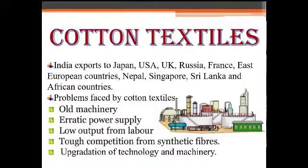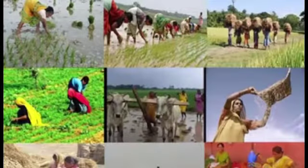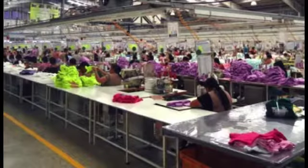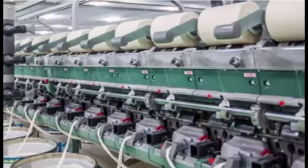The textile industry in India exports its products to countries like Japan, USA, Nepal, Singapore, etc. Some of the problems faced by this industry are: low output of labor, as the productivity of labor is low. The clothing sector needs high quality and cost-effective cloth processing facilities, for which modernization of mills is a must.